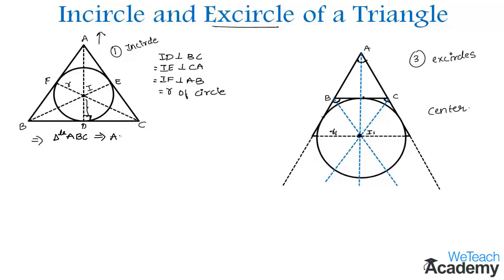The area of such a triangle will be equal to the area of triangle BIC plus area of triangle CIA plus area of triangle AIB.